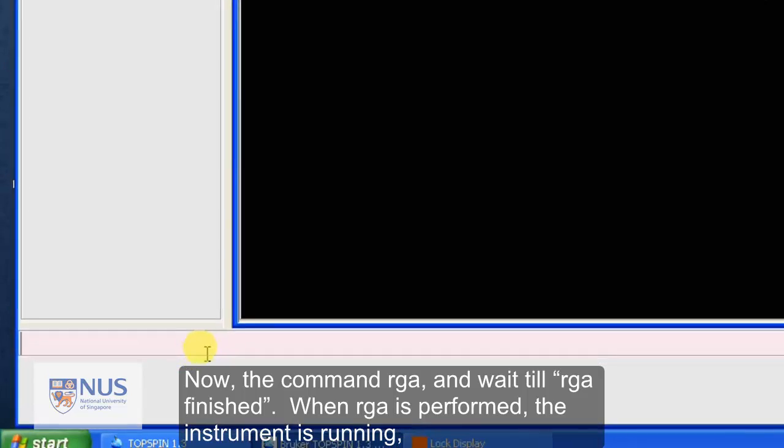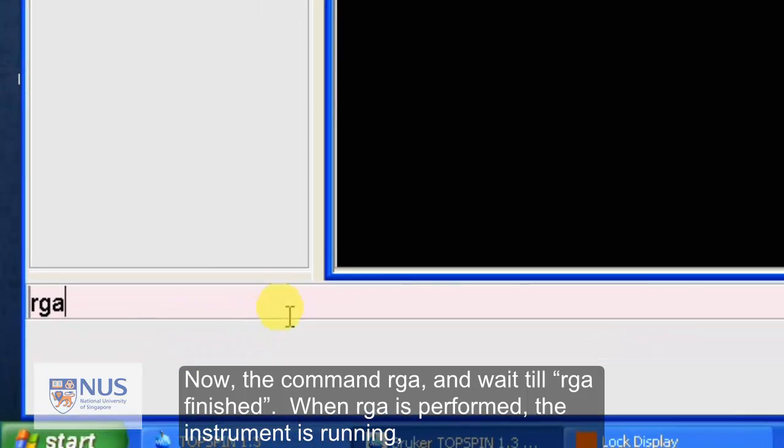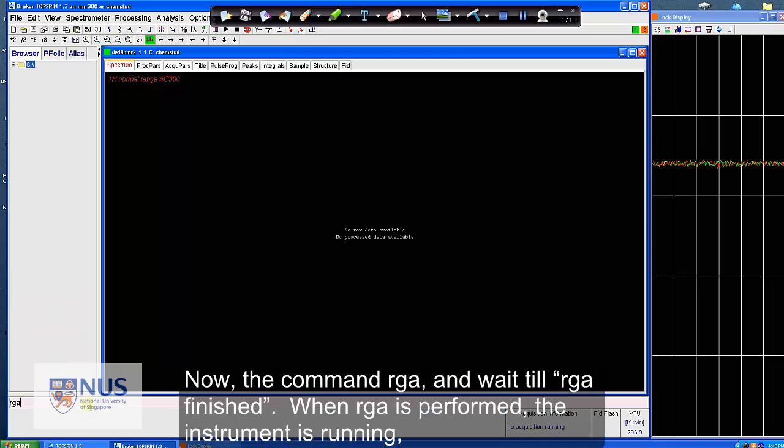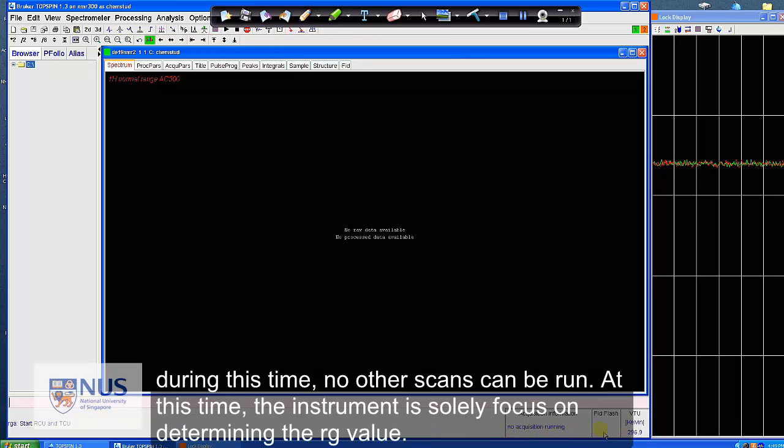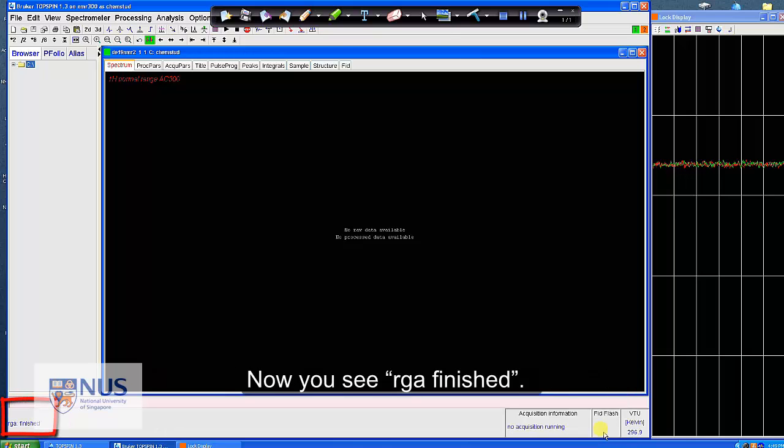Now, the command RGA. Enter. And wait till RGA finished. When RGA is performed, the instrument is running, and during this time, no other scans can be run. At this time, the instrument is solely focused on determining the RG value. Now, you see RGA finished.